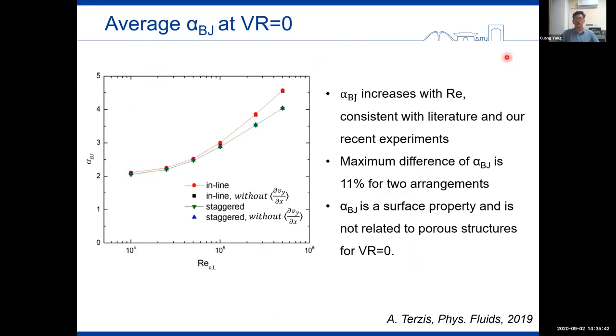And then we further calculated the average alpha at the interface for different Reynolds numbers for both inline and staggered cases. As can be found from this figure, alpha increases with the Reynolds number. This is also consistent with our recent experiments. And the maximum difference for the two arrangements is also quite small, which proves that the alpha is only a surface property and is not quite related to the pore structures for this parallel flow with the velocity ratio of zero.